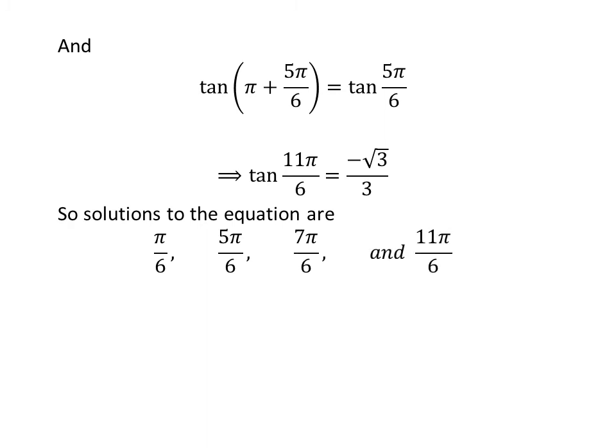So, the solutions of the equation 2 times square of secant of x plus square of tangent of x minus 3 is equal to 0 in the interval 0 to 2 times pi are: pi upon 6, 5 times pi upon 6, 7 times pi upon 6, and 11 times pi upon 6.